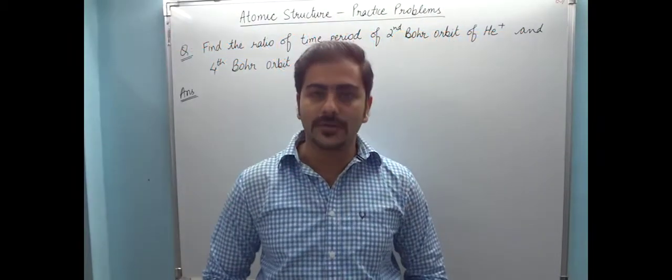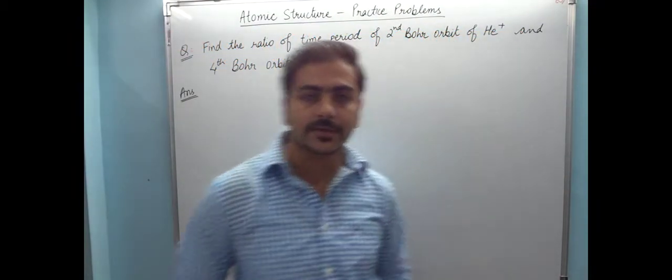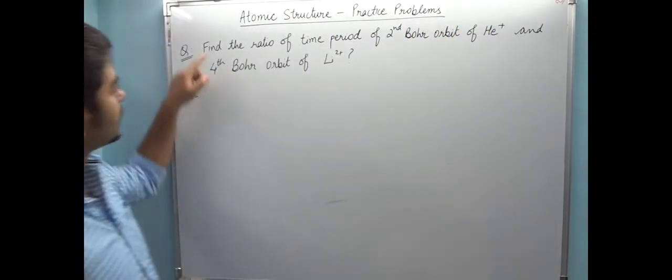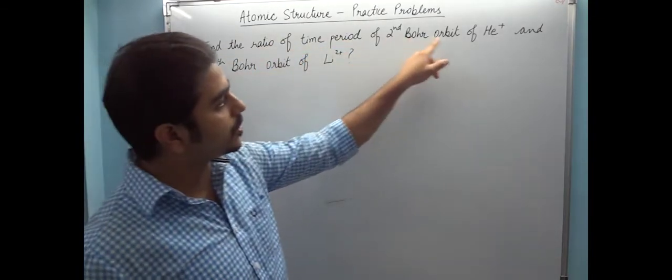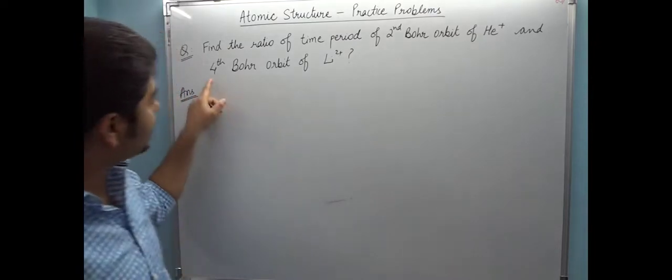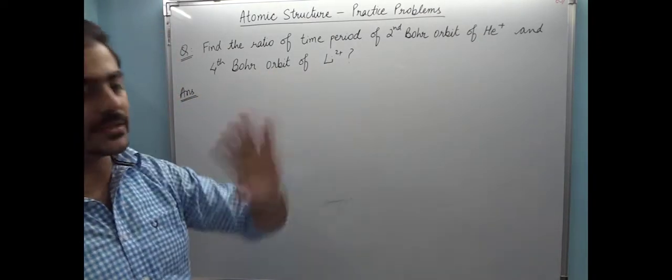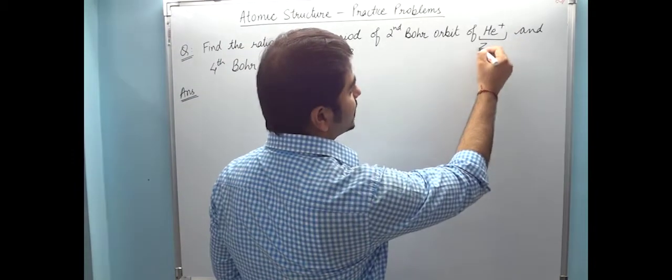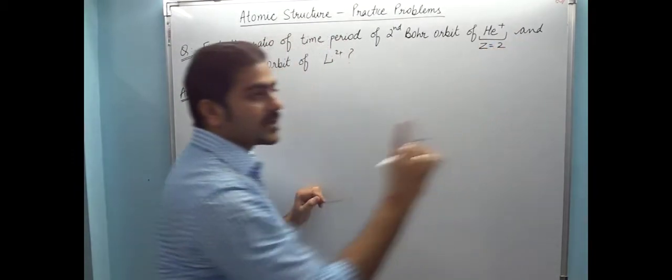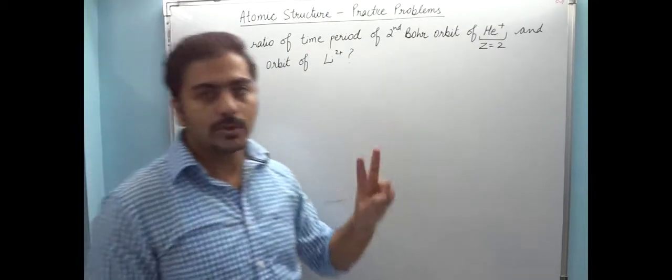Hi friends, let's do one more practice problem on atomic structure. The question is: find the ratio of time period of second Bohr orbit of helium and fourth Bohr orbit of lithium. First thing to clear: helium has atomic number Z=2, helium has 2 electrons.